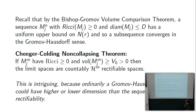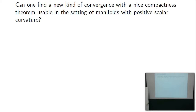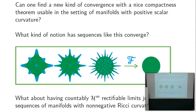In general, Gromov-Hausdorff limits can have higher or lower dimension than the sequence and certainly would not have rectifiability — a Ricci bound is very important. To define a new notion of convergence, you'd want a compactness theorem usable in the setting of positive scalar curvature, where this hairy-sphere sequence converges to a sphere, with countably H^m rectifiable limits. This leads to the concept of intrinsic flat convergence.